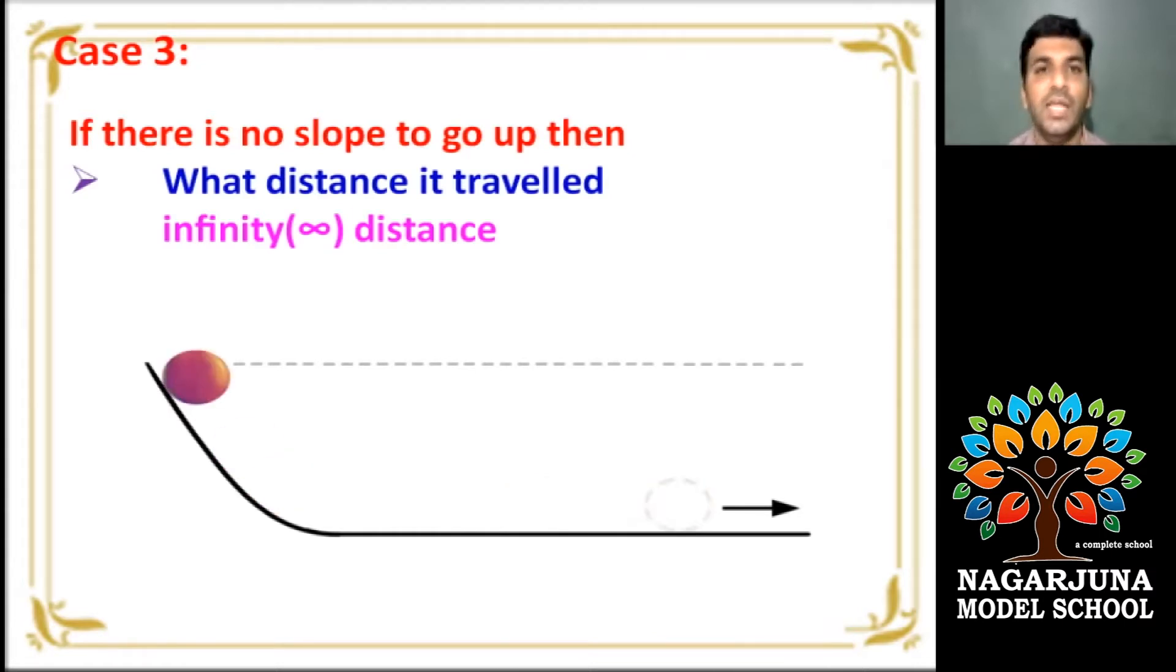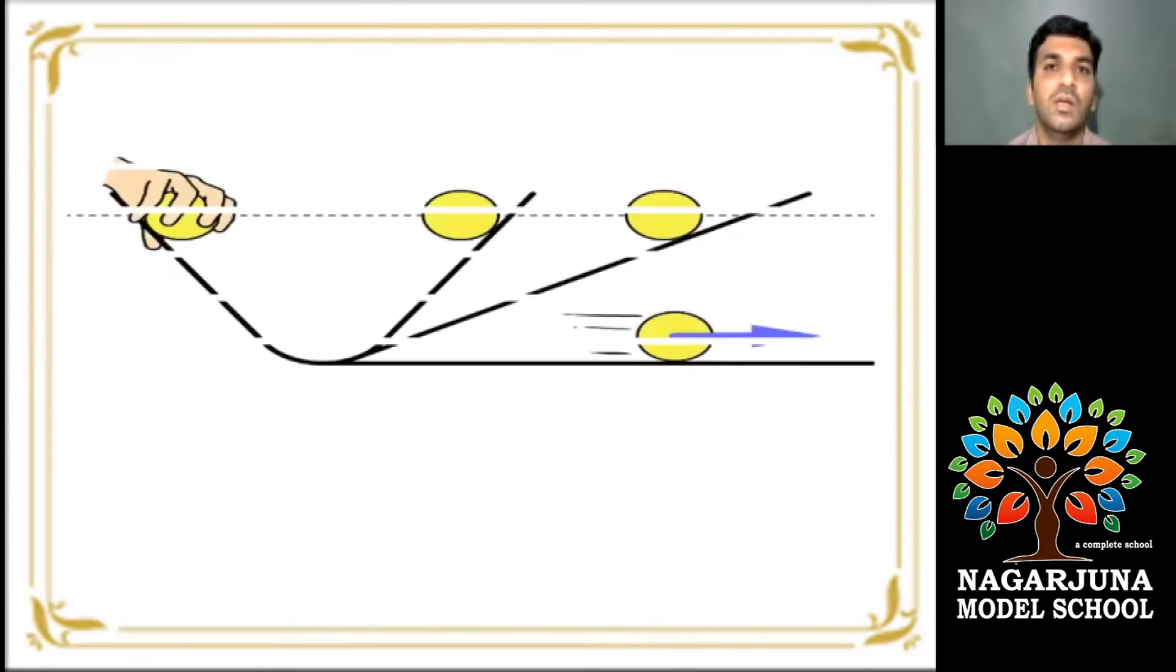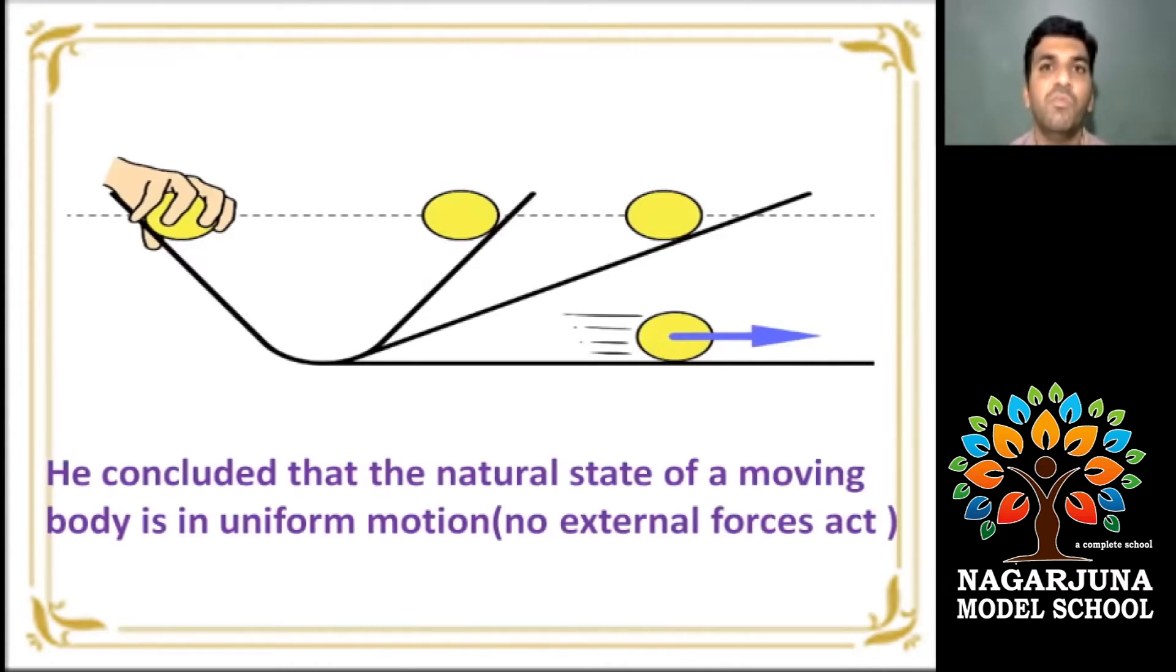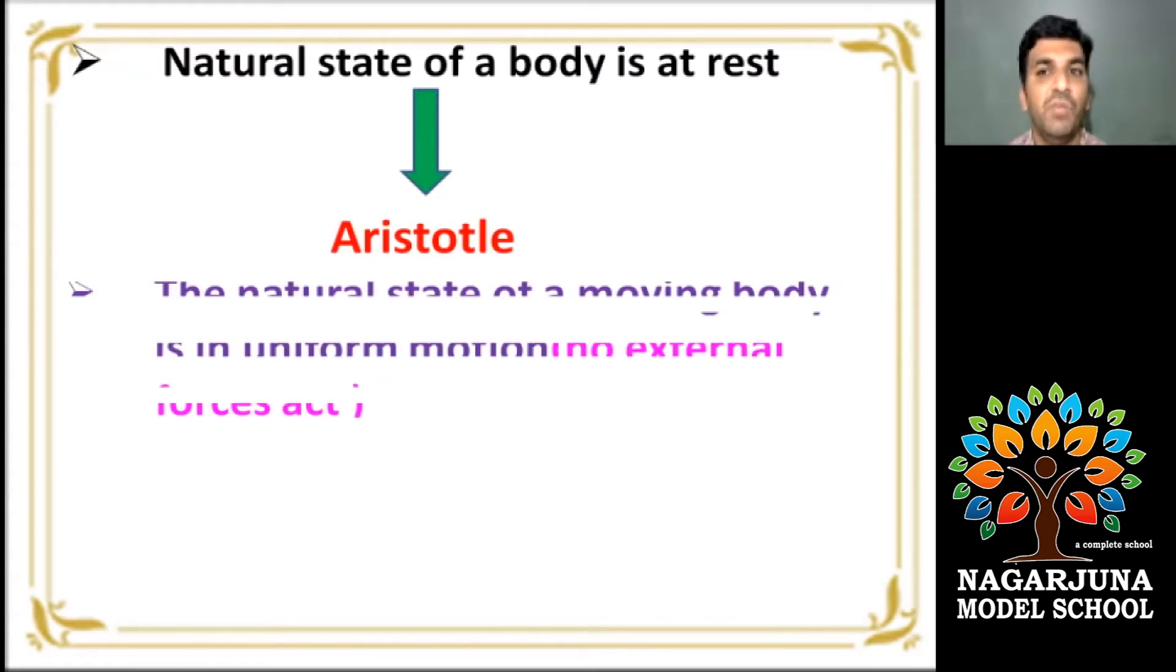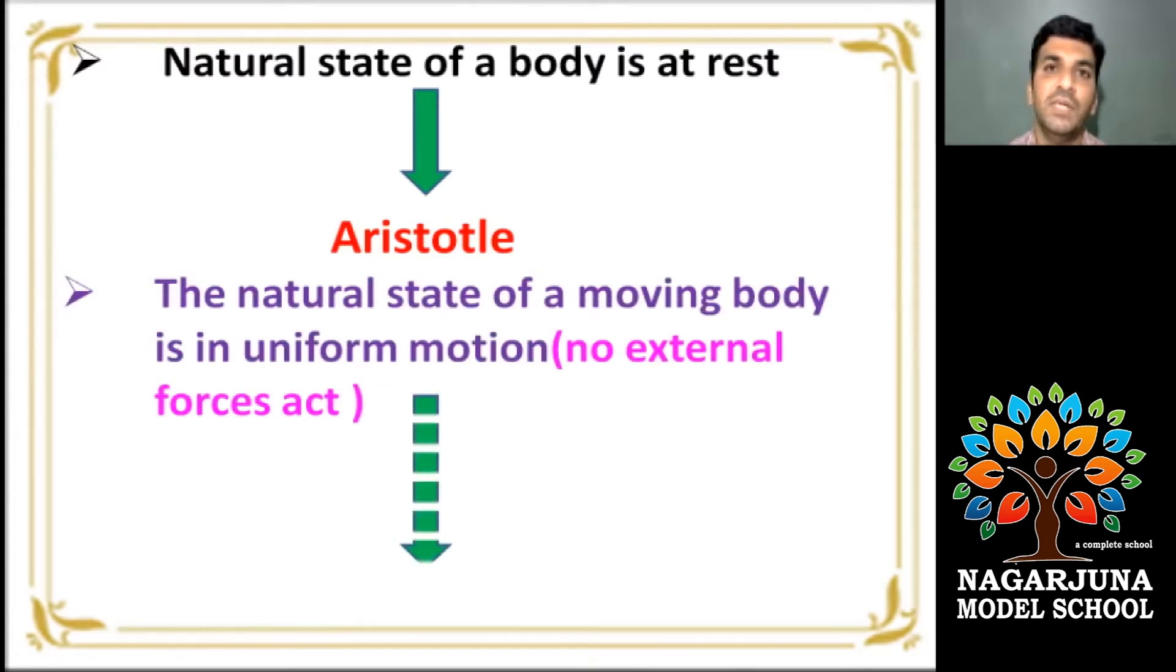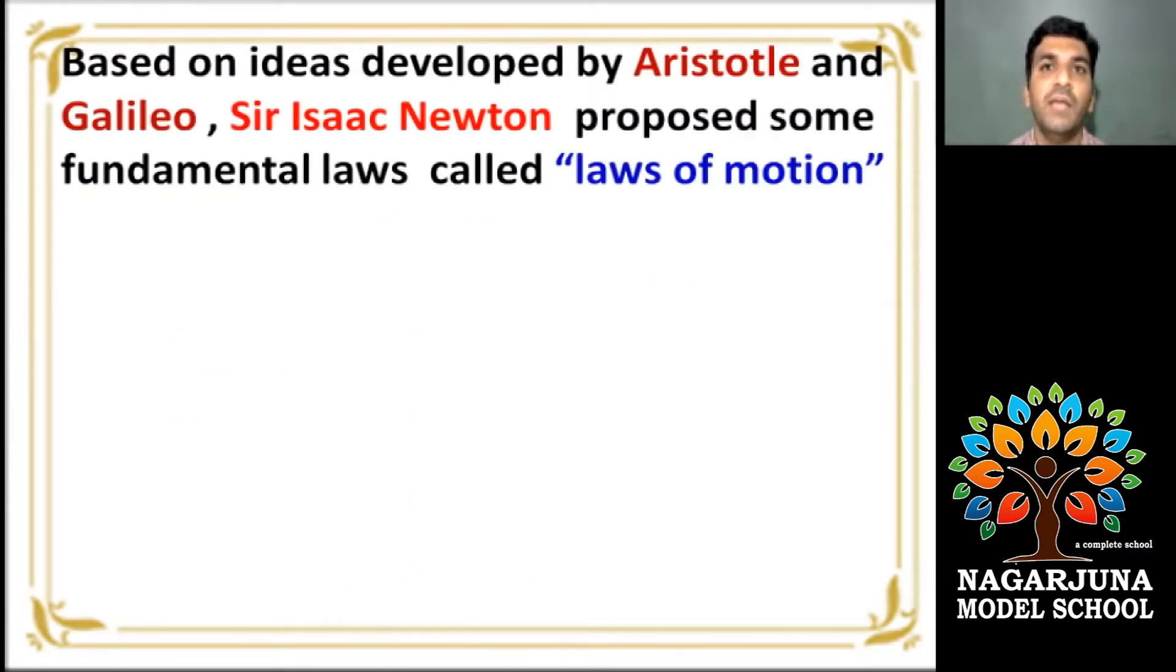According to Galileo Galilei, and finally, he concluded that the natural state of a moving body is in uniform motion if there is no external forces. So, natural state of a body is at rest stated by Aristotle. The natural state of a moving body in uniform motion stated by Galileo Galilei. Based on ideas developed by Aristotle and Galileo, Sir Isaac Newton proposed some fundamental laws called laws of motion.